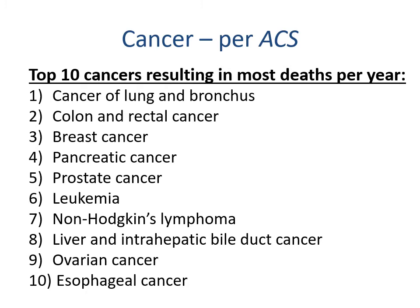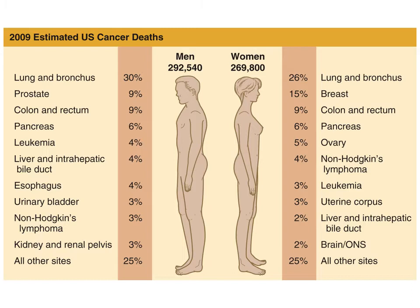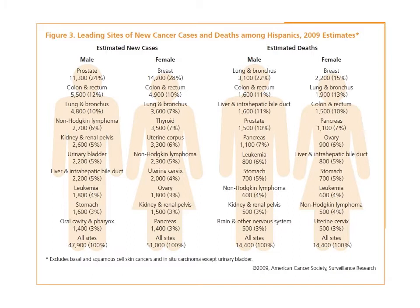The top ten cancers resulting in the most deaths per year include lung and bronchus, colon and rectal, breast, pancreatic, prostate, leukemia, non-Hodgkin's lymphoma, liver and intrahepatic bile duct, ovarian, and esophageal cancer. A breakdown by sex shows similarities but also distinct differences in cancer location. Charts show estimated new cases and estimated deaths, illustrating the deadliest cancers versus total cancer occurrence.